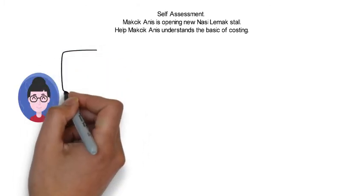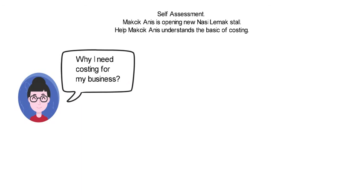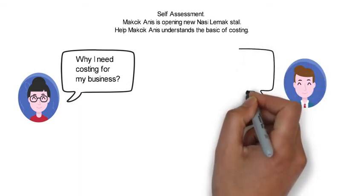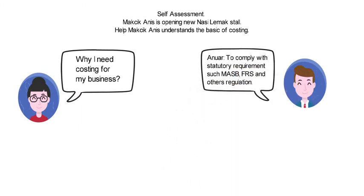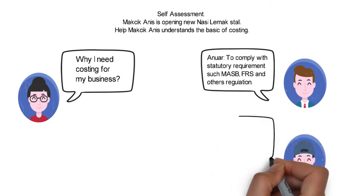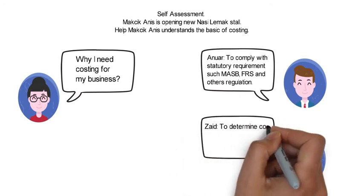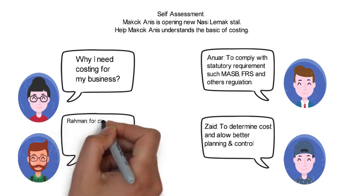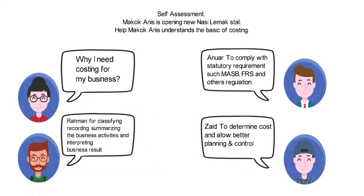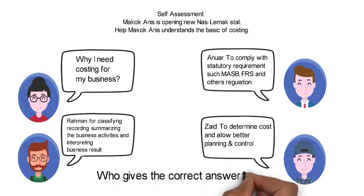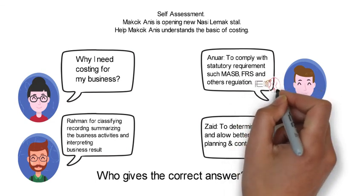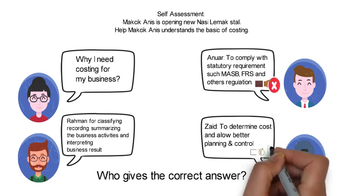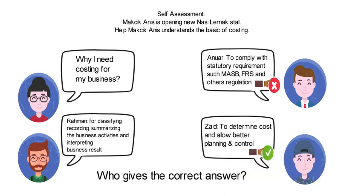Mark Chicanis is opening a new Nasi Lemak stall. Help Mark Chicanis understand the basics of costing. The question is: why do I need costing for my business? Anur's answer — to comply with statutory requirements such as MASB, FRS and other regulations — is incorrect, as costing is not required to comply with any statutory body. Sade's answer — to determine cost and allow better planning and control — is correct. While Raman's answer — for classifying, recording, summarizing business activities and interpreting business results — is actually the definition of financial accounting.